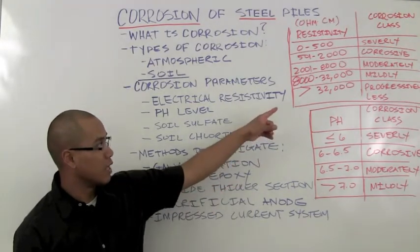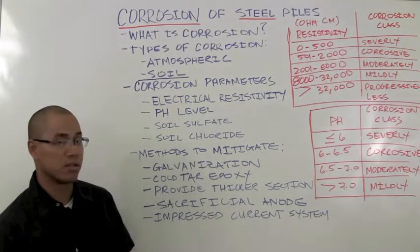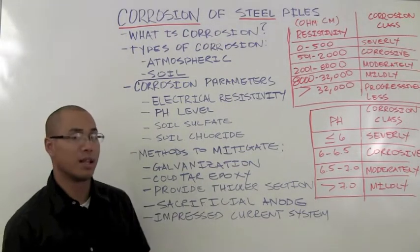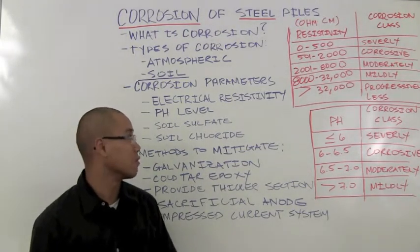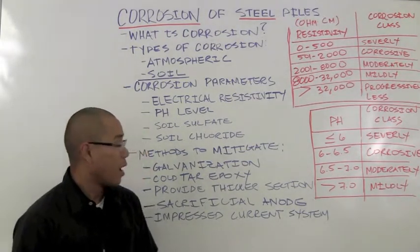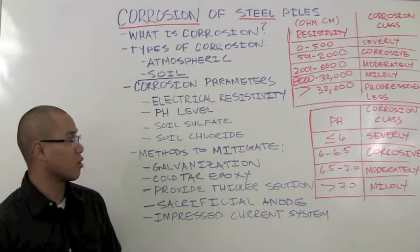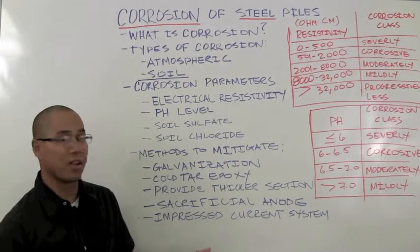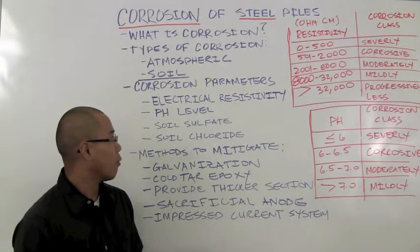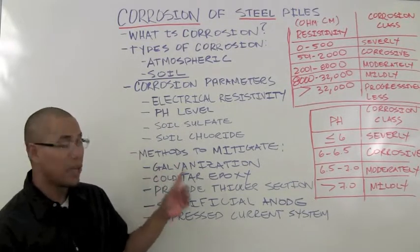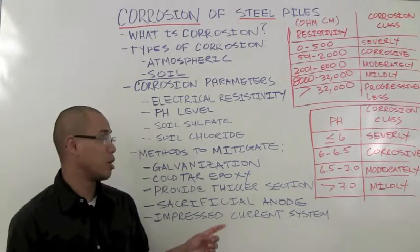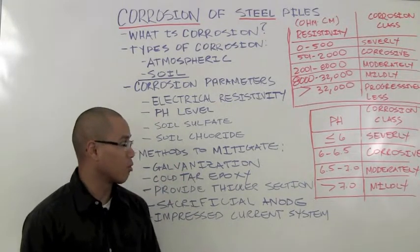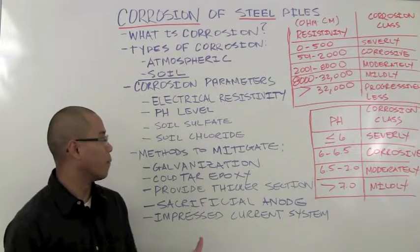As you can see, anything above 32,000 ohm centimeters, the soil is deemed to be progressively less corrosive. However, if the piles are to be coated or galvanized with zinc, pH also plays a major role in corrosion rates.